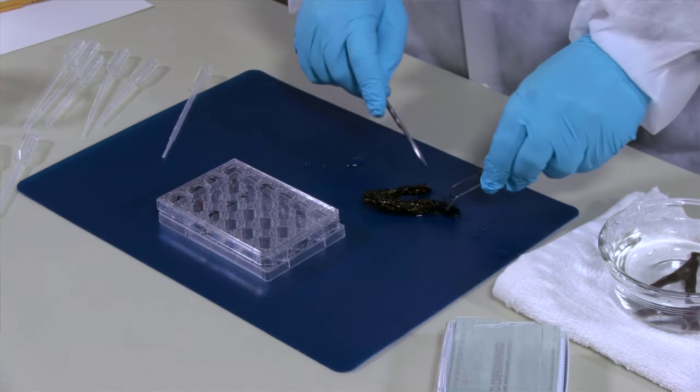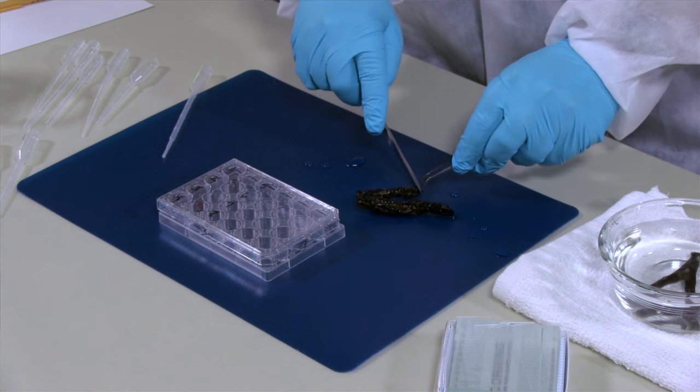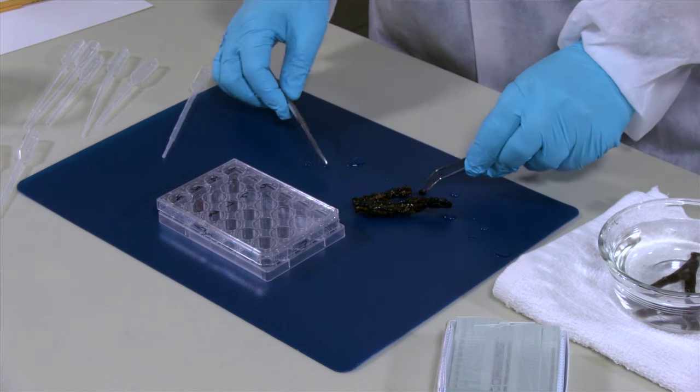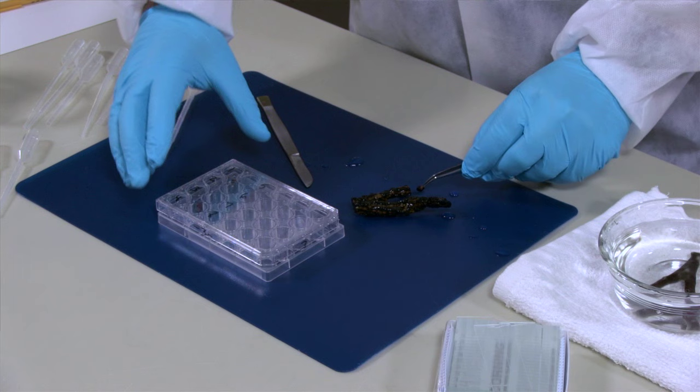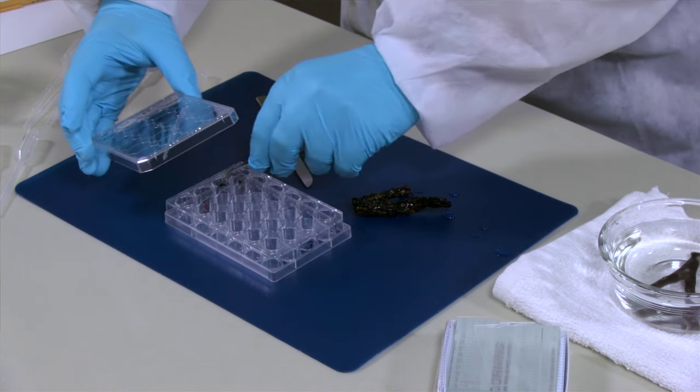We'll take this sponge, cut a small chunk off the sponge, and place it in the well.